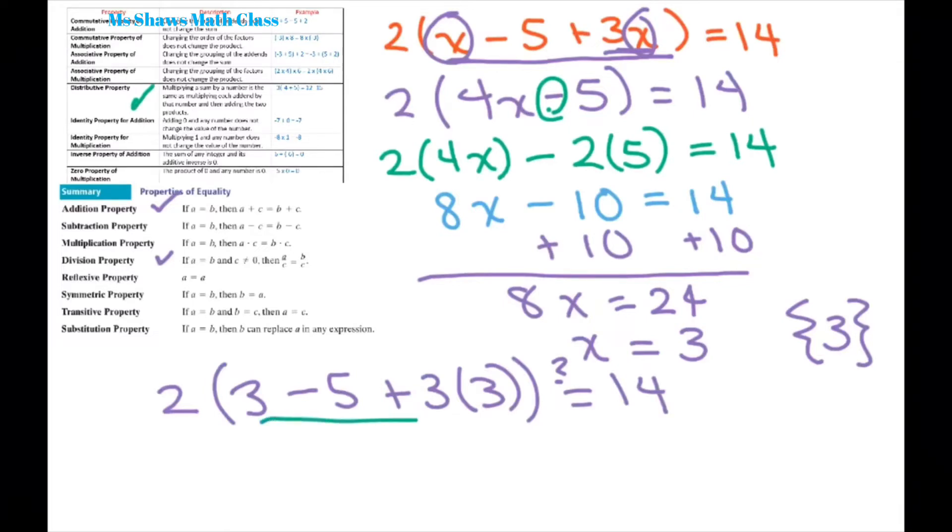Let's take care of this part here. Three plus nine is 12 minus five is seven. Does that equal 14? Two times seven is 14. So you do get 14 equals 14. So three is our solution.